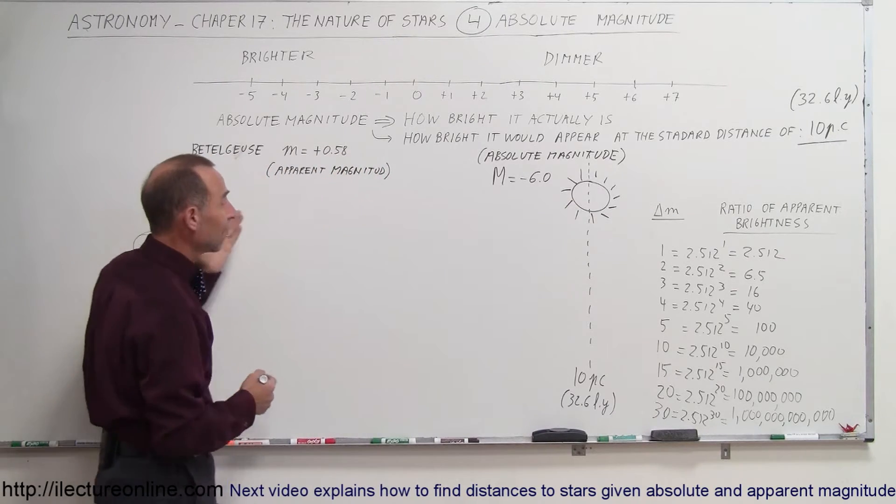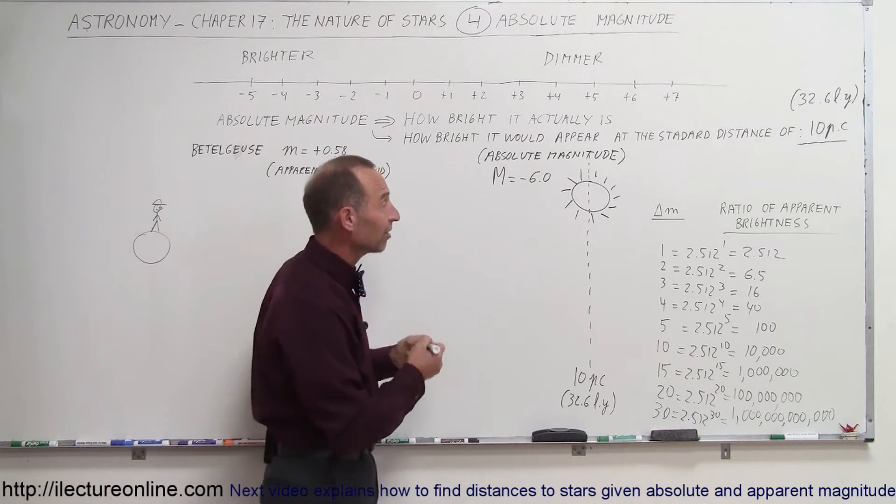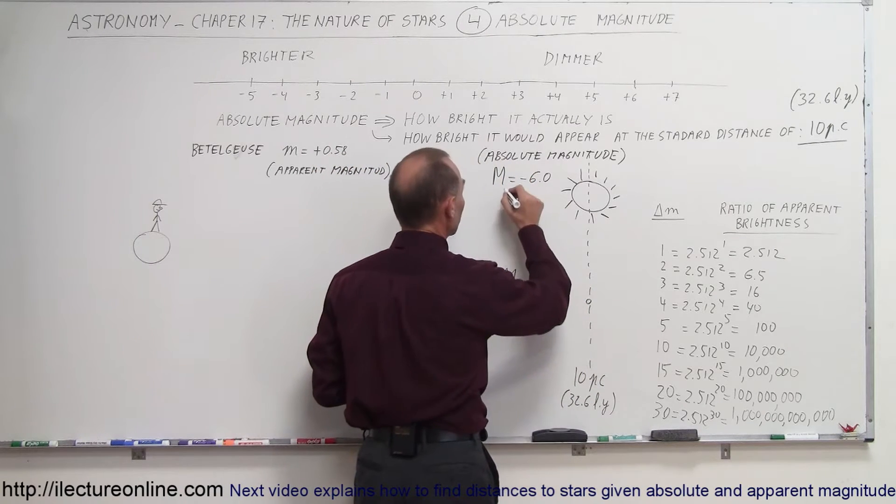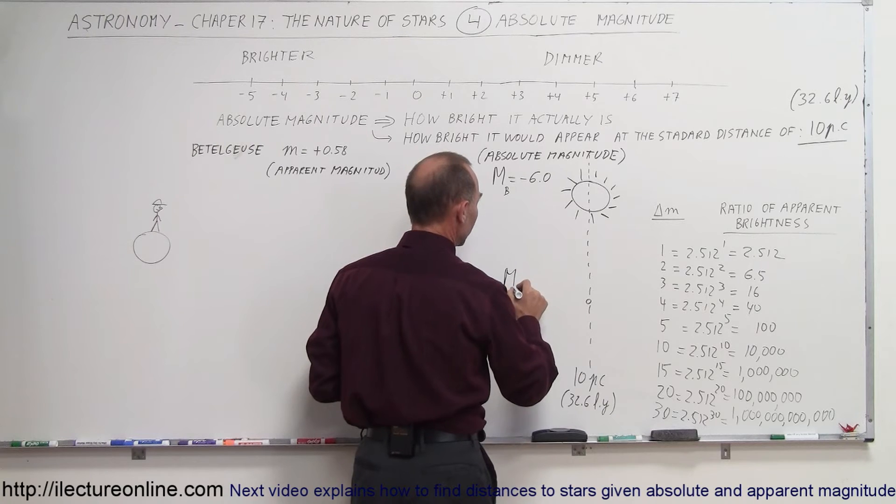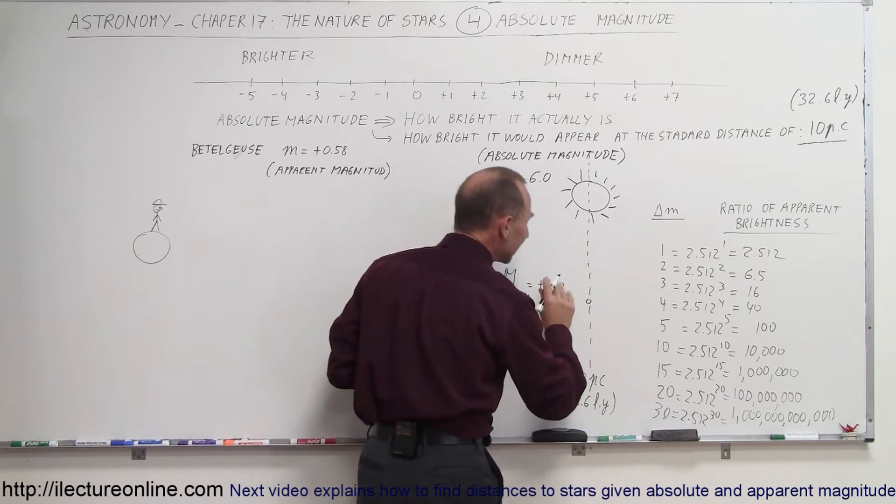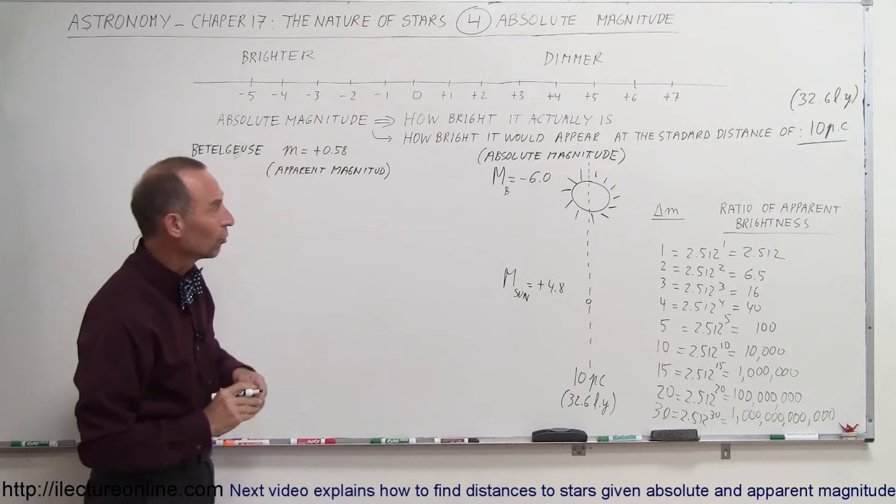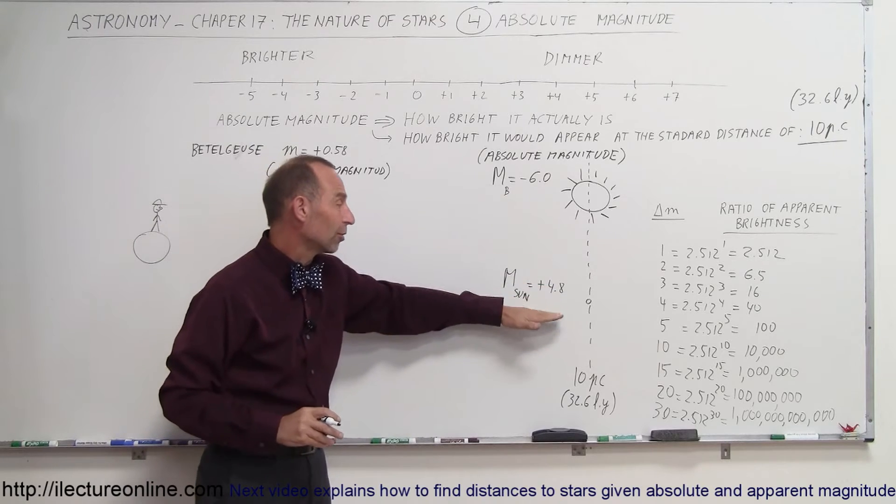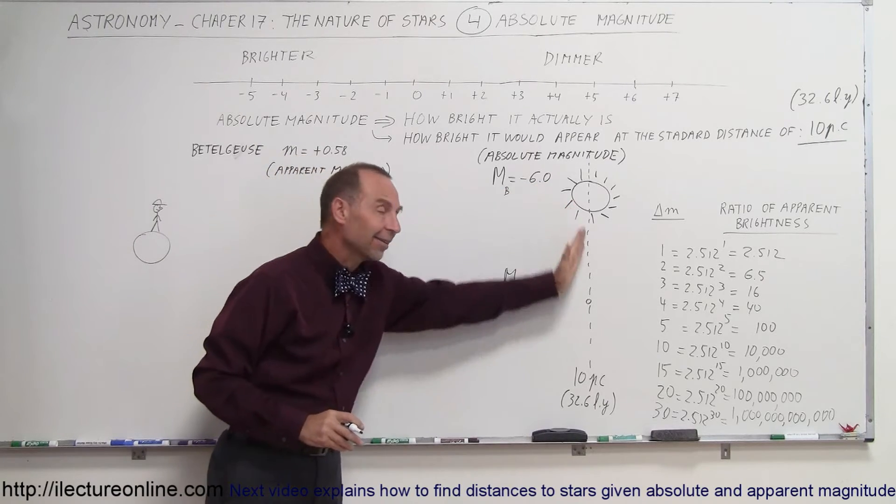Well, if we took our sun and placed it at a distance of 10 parsecs, you would be surprised. It would have a magnitude, so this would be Betelgeuse, and the sun, magnitude of the sun, would be about a plus 4.8, approximately in that neighborhood. So, notice how much brighter Betelgeuse is compared to the sun at the same distance.